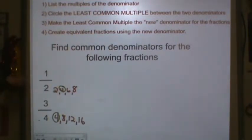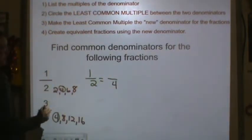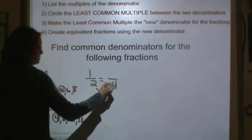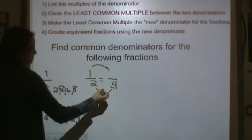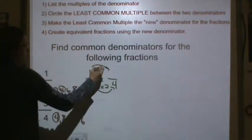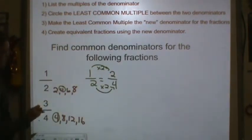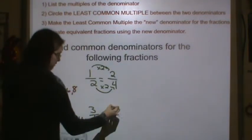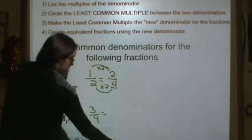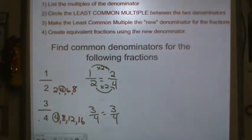Now we need to make the least common multiple the new denominator for the fractions. So one half is equal to something fourths because that's the denominator I circled. Now remember to find equivalent fractions we multiply the top and bottom by the same number. So 2 times 2 is 4, 1 times 2 is 2. So we have 2 fourths and then 3 fourths is equal to 3 fourths. So now we have a common denominator for these two fractions.